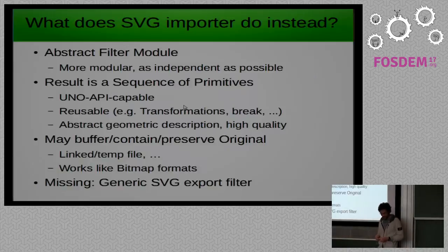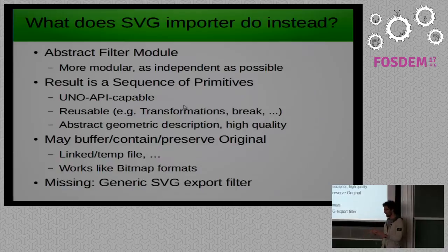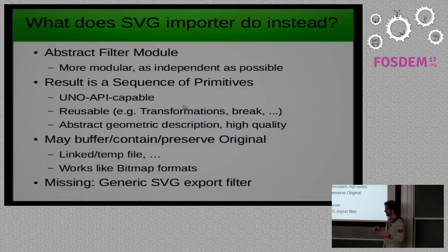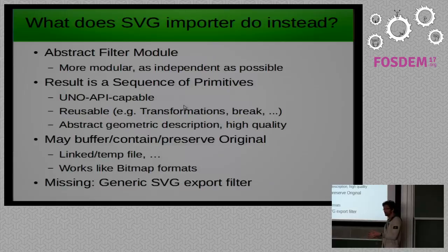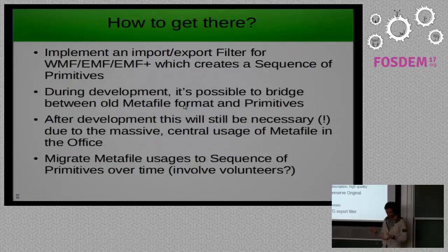What we don't have for SVG is a generic SVG export filter for simple parts of graphics. We have a big SVG export filter which iterates over all pages and all objects and does a good job, but it would be better if internally for single objects there were a low-level SVG export that could export single objects. Currently, when you have a single object selected and export as SVG, a whole page and a whole document get created.